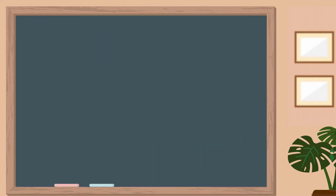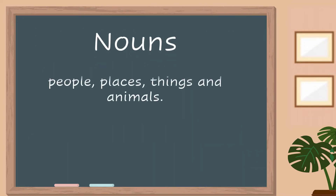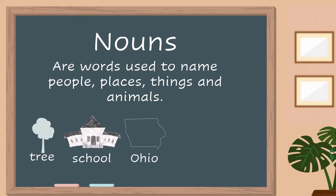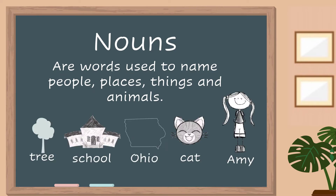Nouns are used to name people, places, things, and animals. Some examples of nouns are the words tree, school, Ohio, cat, and Amy.